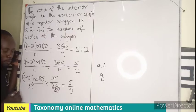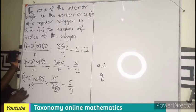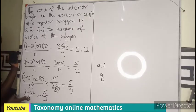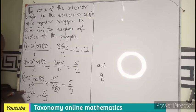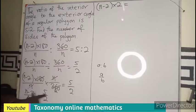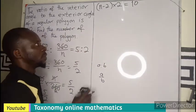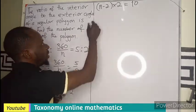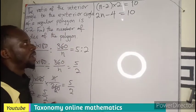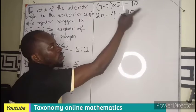After cancellation, we are left with (n − 2) / 2 = 5 / 2. This is now a simple equation involving fractions. We cross-multiply: 2 × (n − 2) = 5 × 2, which gives us 2(n − 2) = 10. Expanding the bracket: 2n − 4 = 10.